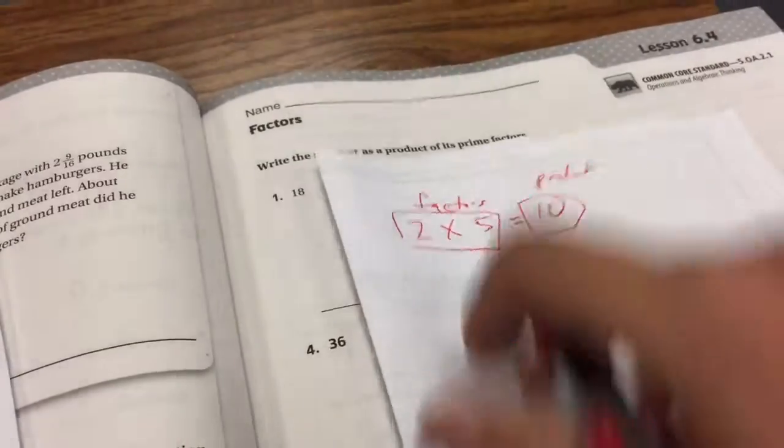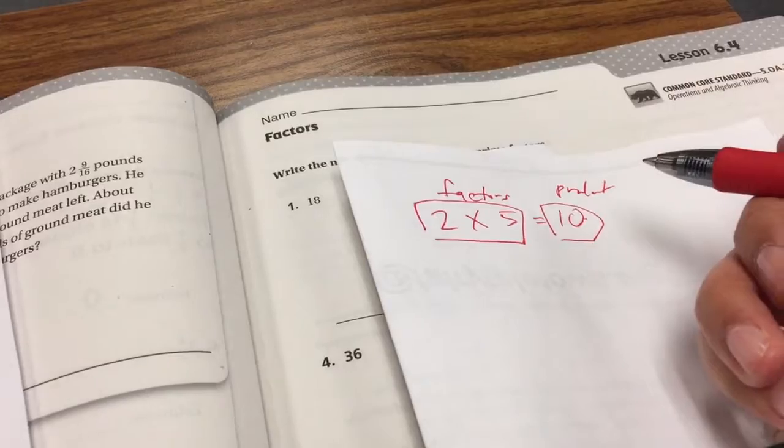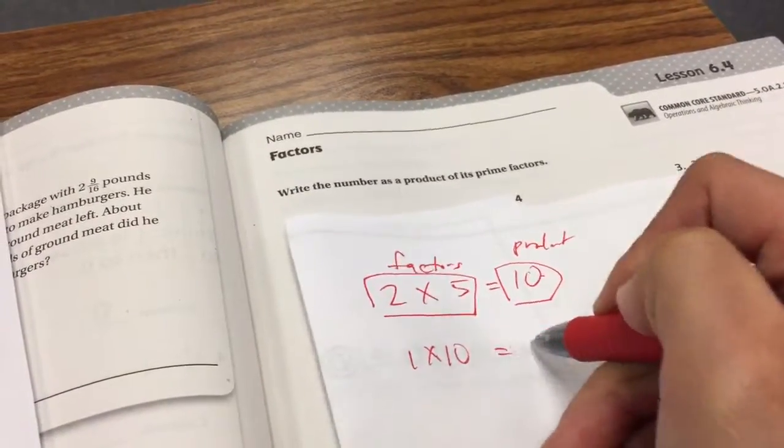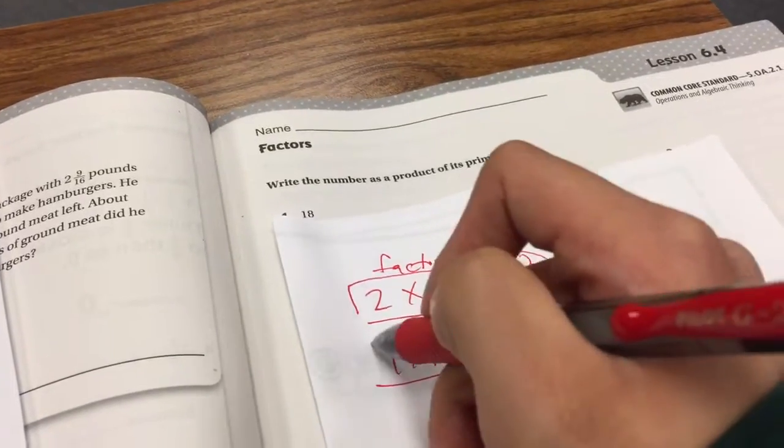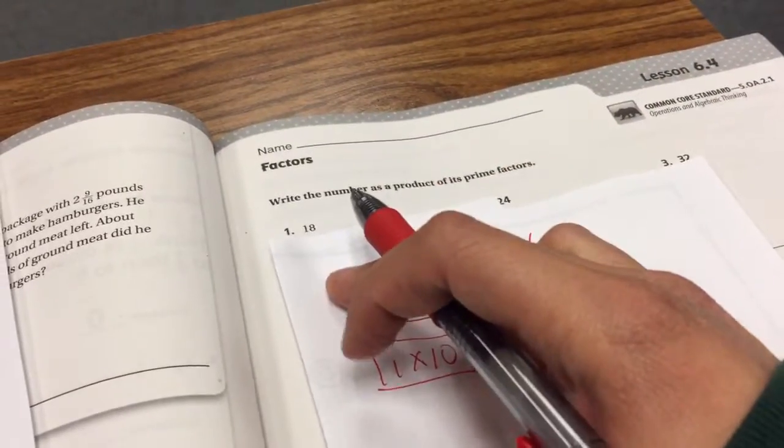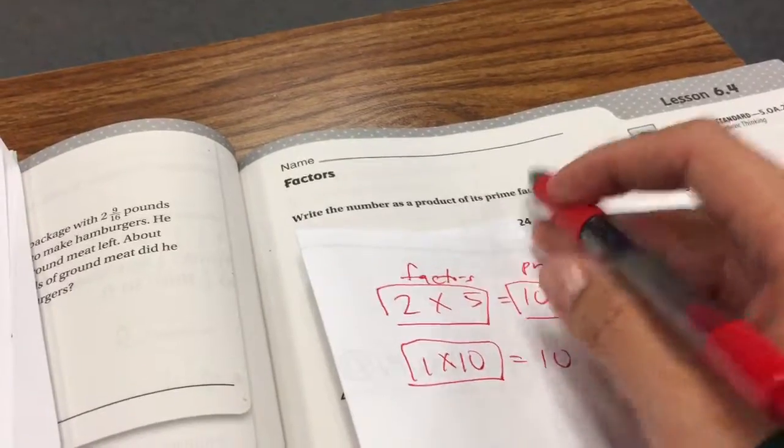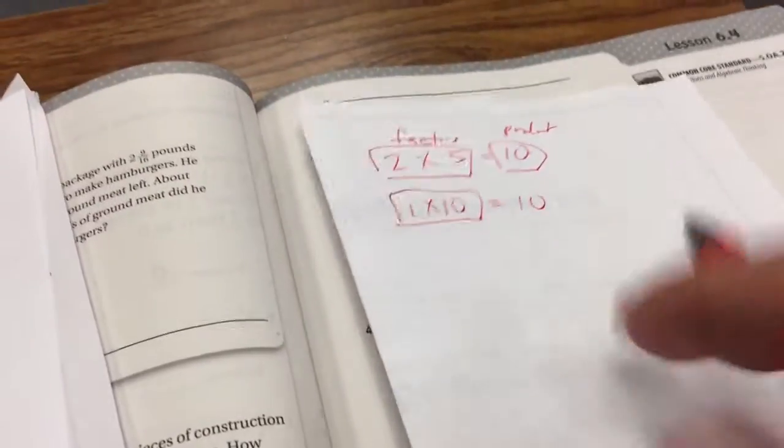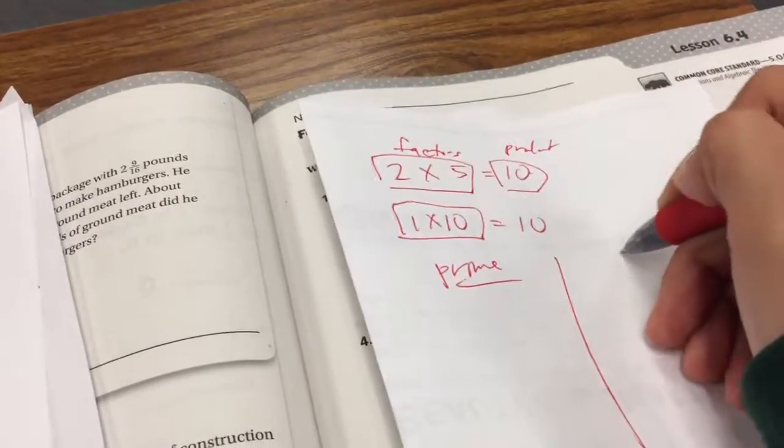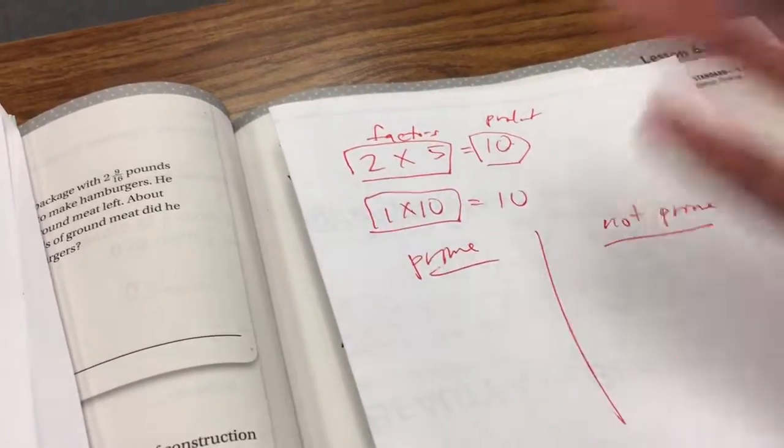If you're asking for the number and its factors, 10 is the product, and its factors are 2 and 5. Another way to get 10 would be 1 times 10 equals 10. These are factors that get to the product. The important part about this lesson is that they're asking for prime factors. And so we need to know what prime means. I'm going to give it a little chart here.